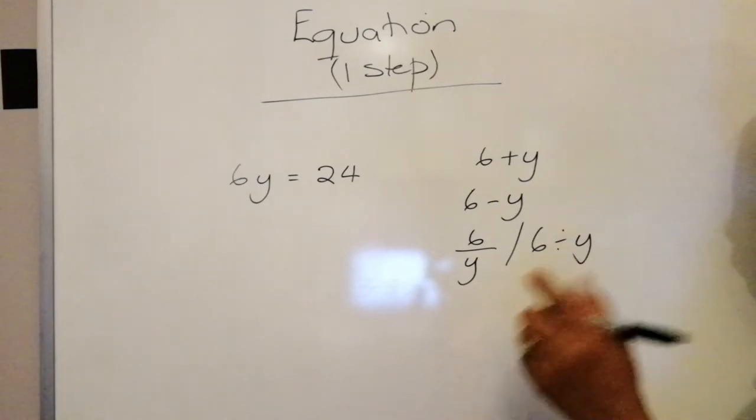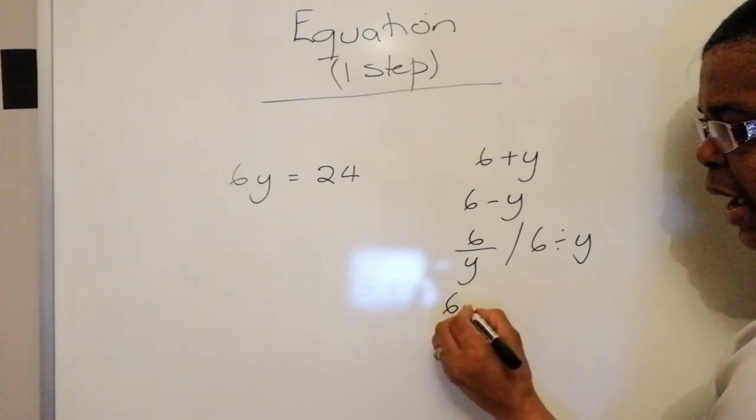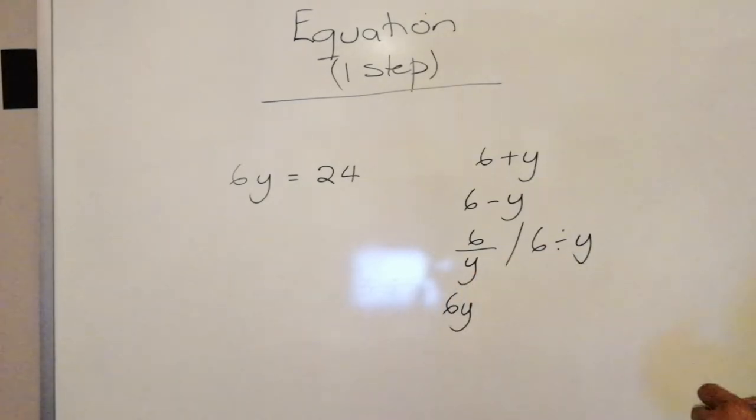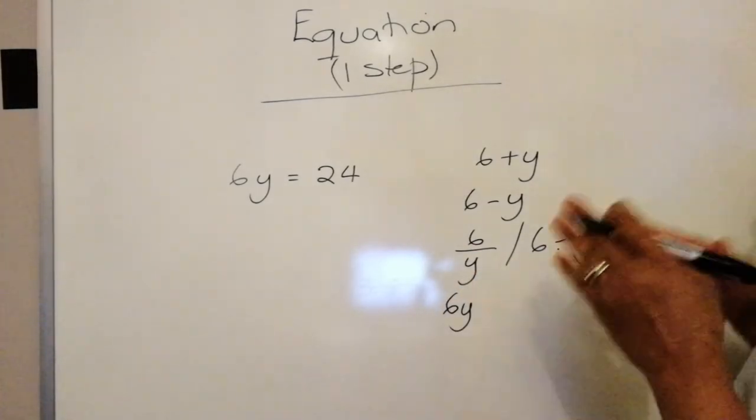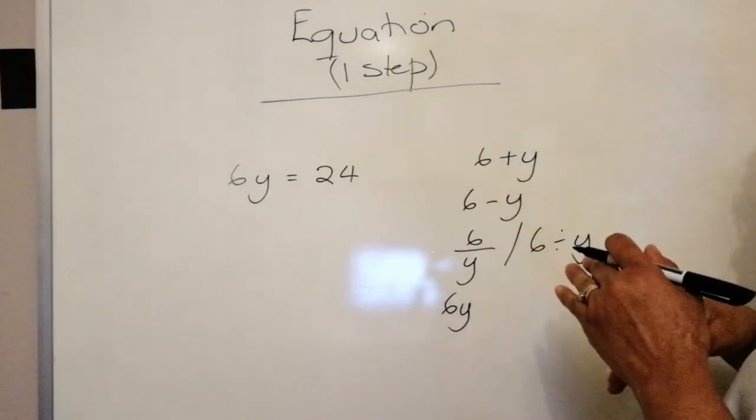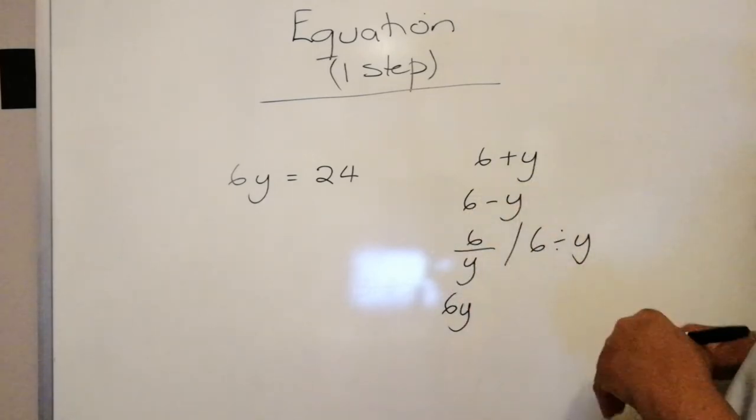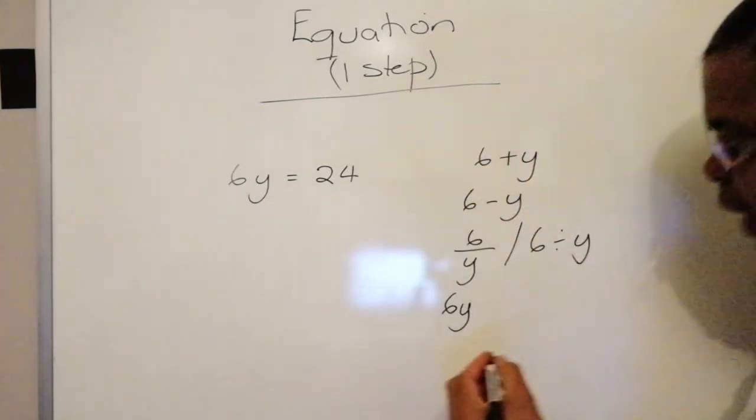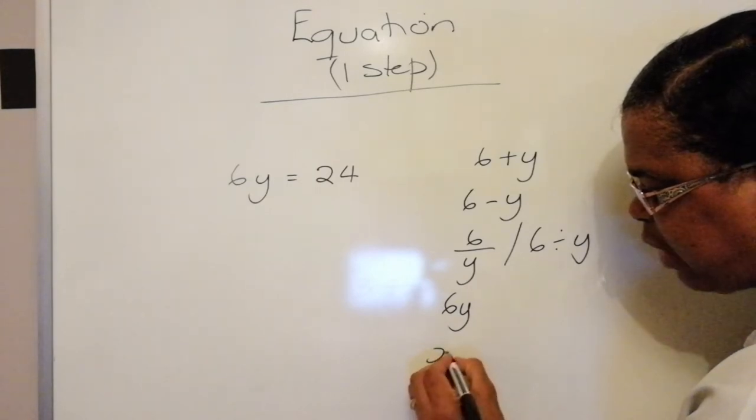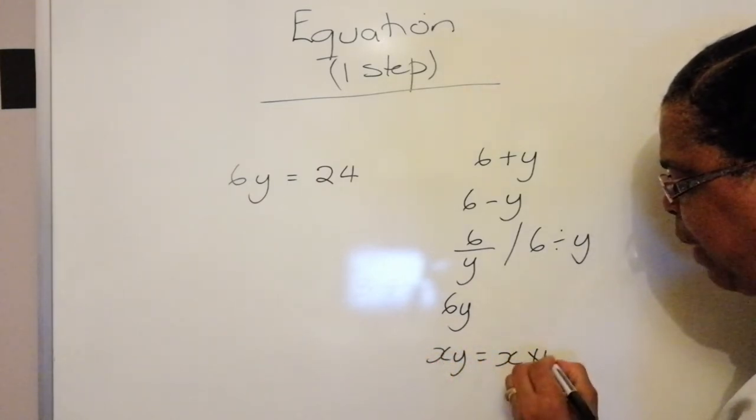However, if you are doing 6 multiplied by y, it can be written as just 6y. So whenever you have a number and a letter next to each other, one's multiplying the other. Or if you have a letter next to another letter, it means that one is multiplying the other. For example, if we have xy, that's going to mean x multiplied by y.